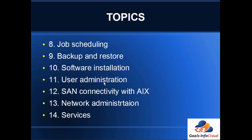The eleventh topic is user administration. The twelfth topic is SAN connectivity with AIX — we'll cover what an HBA card is, how to connect it to the AIX server, what commands to use, and what multipathing is. The thirteenth topic is network administration, covering how to assign an IP address and hostname to the AIX system, how to make entries in the /etc/hosts file, and what link aggregation is.